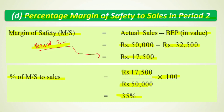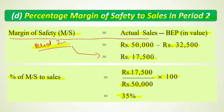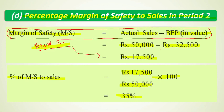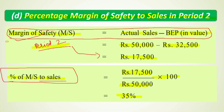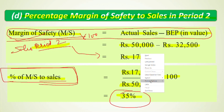Let's revise the formulas. Margin of Safety = Actual Sales minus Break-Even Point. To find percentage margin of safety to sales: take the margin of safety value, divide by sales, and multiply by 100. Our answer for Period 2 is 35%.